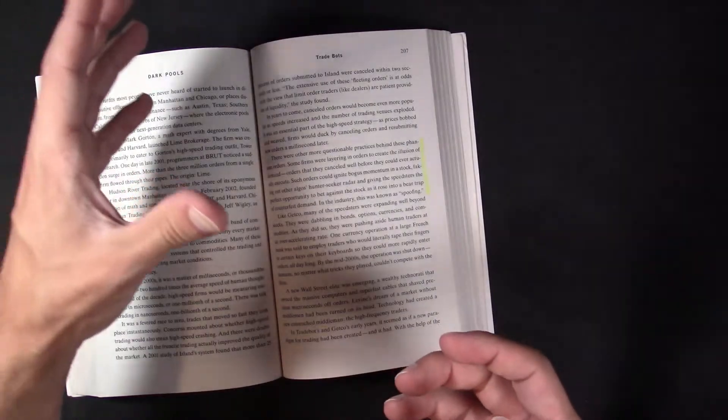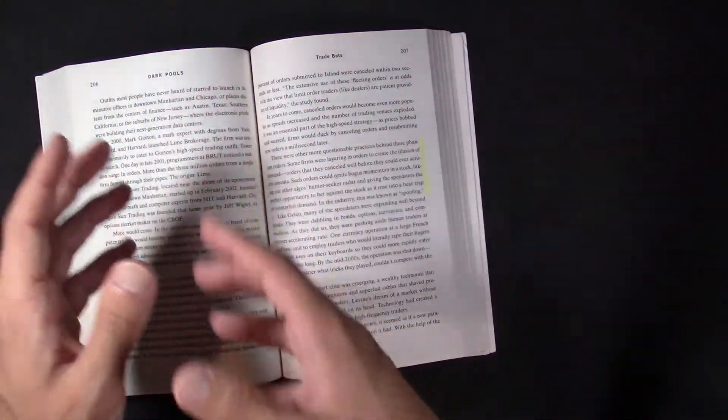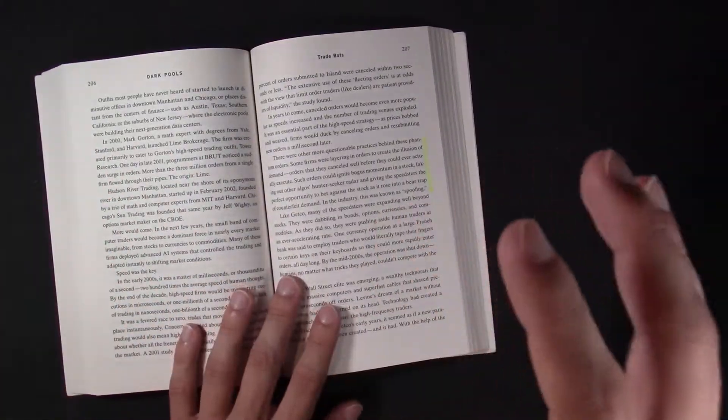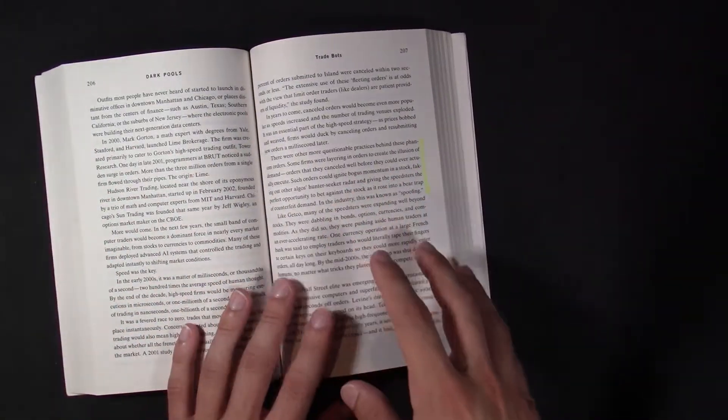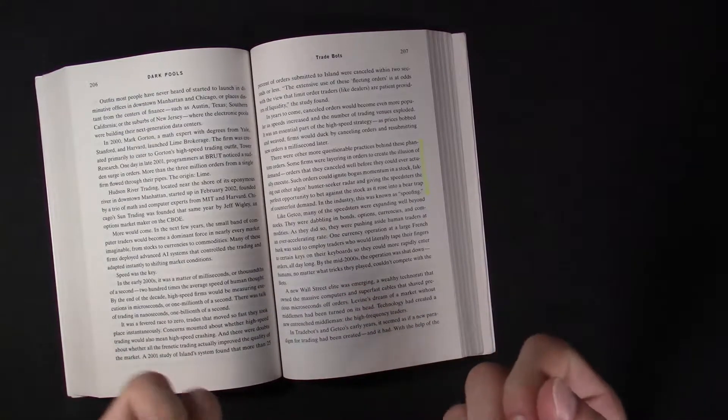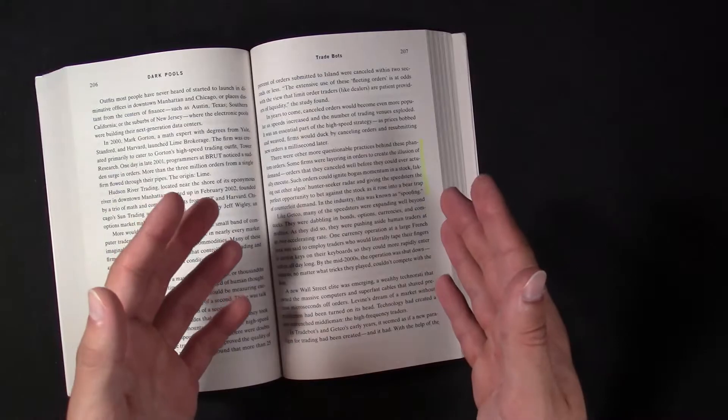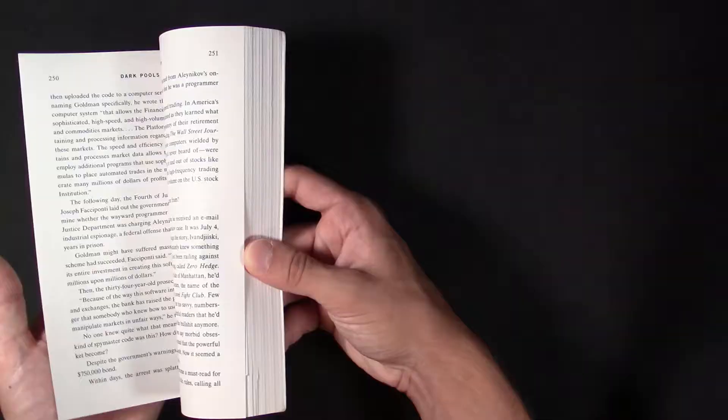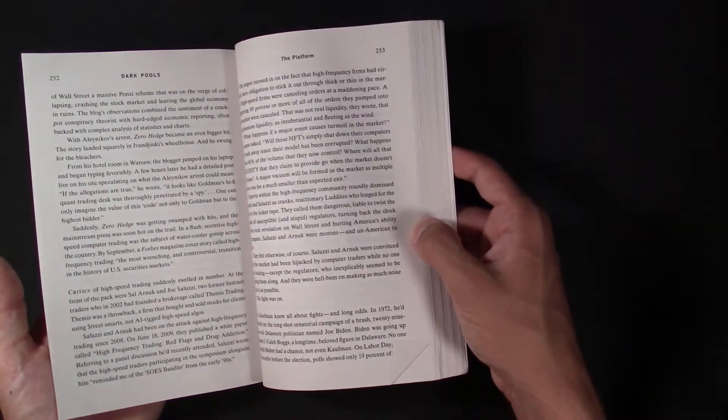You have to have these order flows where it fakes people out or fakes other bots out, right? You say, oh, there's a whale over here. When there isn't, it's actually an illusion. And then bots go to there and you fake it. It's a very complicated game, which doesn't make any sense. And the people working within the field even said that they don't really fully understand what is happening with these bots.